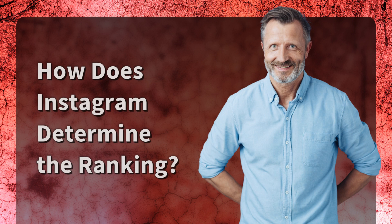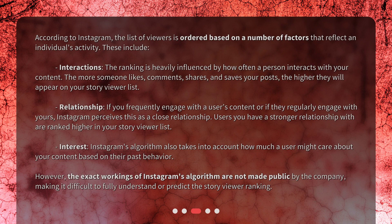How does Instagram determine the ranking? According to Instagram, the list of viewers is ordered based on a number of factors that reflect an individual's activity. These include interactions — the ranking is heavily influenced by how often a person interacts with your content. The more someone likes, comments, shares, and saves your posts, the higher they will appear on your story viewer list. Relationship is another factor: if you frequently engage with a user's content or they regularly engage with yours, Instagram perceives this as a close relationship, ranking those users higher.